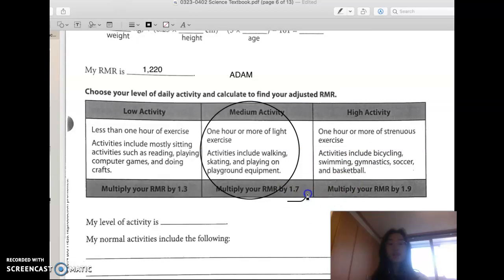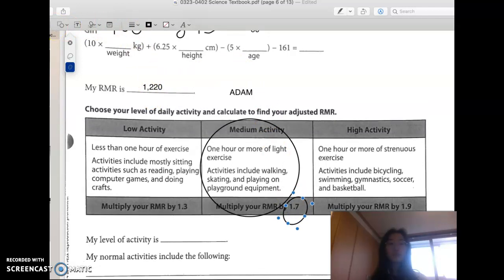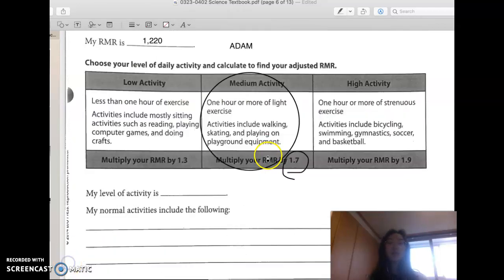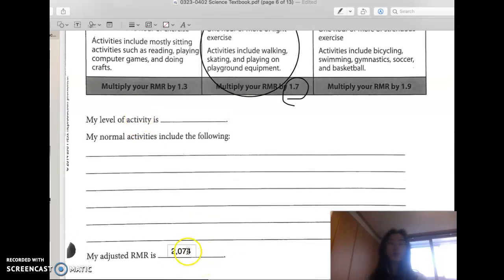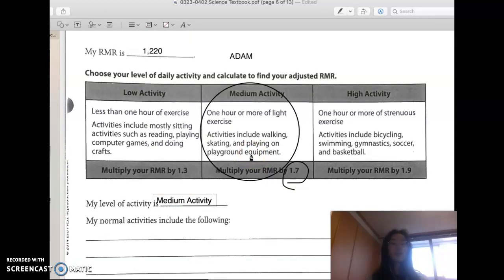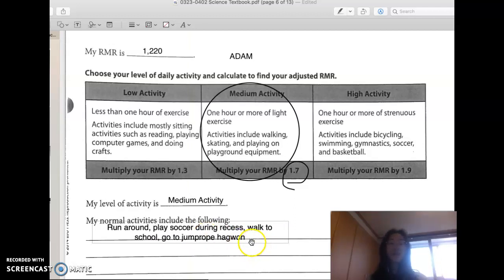Okay, because PE lasts about 50 minutes and he's probably also going to be walking home from school, things like that. So he's going to multiply his RMR by 1.7. So he's going to do 1220 times 1.7. So after I did 1220 times 1.7, it got 2074. Now level of activity, so you're going to write low, medium, or high depending on your personal judgment: medium. My normal activities include, so this is kind of like tell me what kind of activities you usually do on an average day. So let's say Adam, in PE class, run around, play soccer, during recess, walk to school, jump rope, things like that. Okay, so of course it will be different depending on your personal experience.